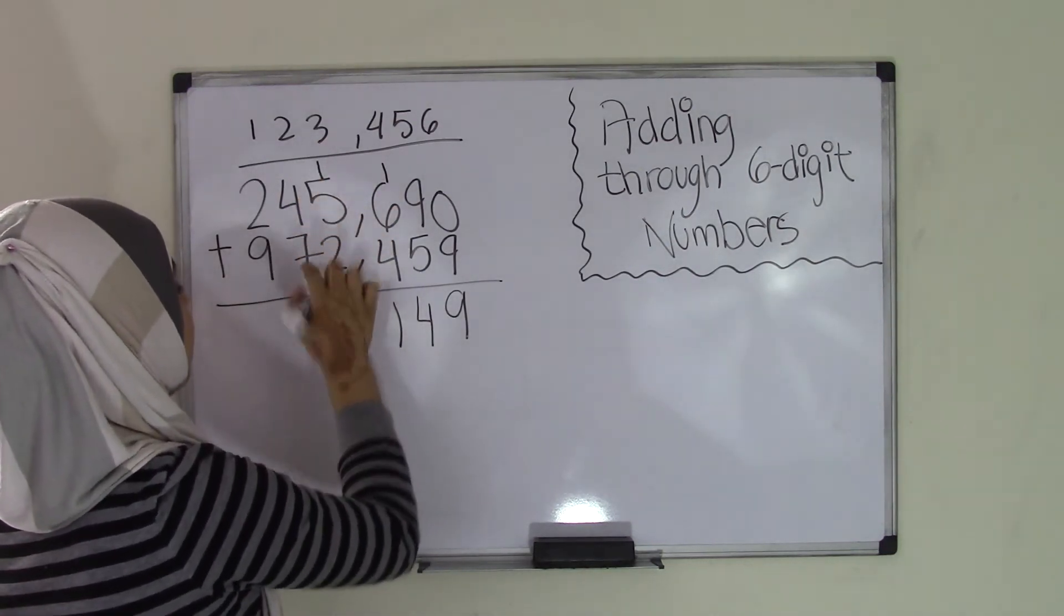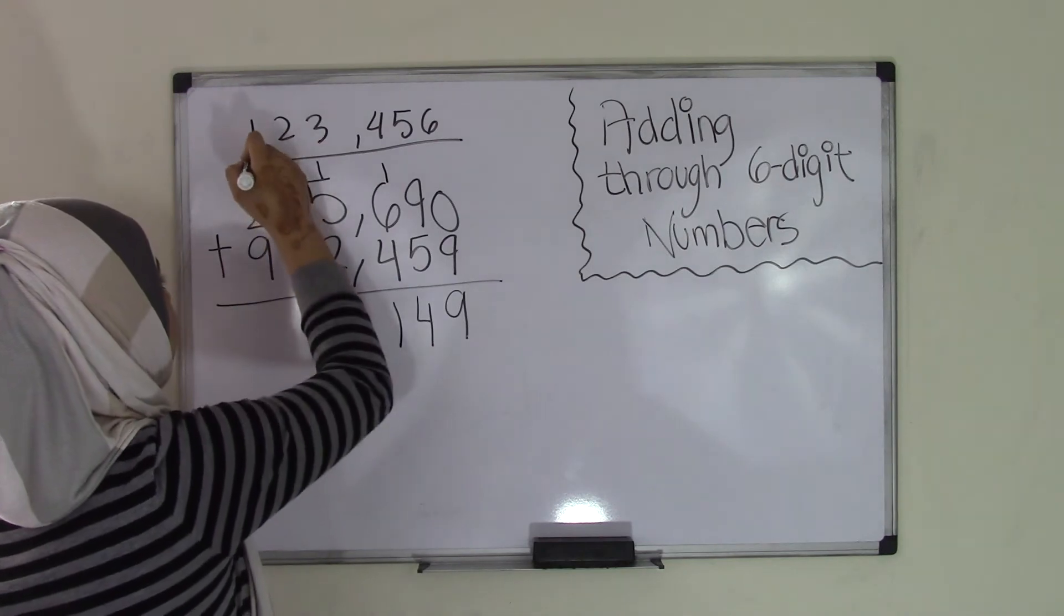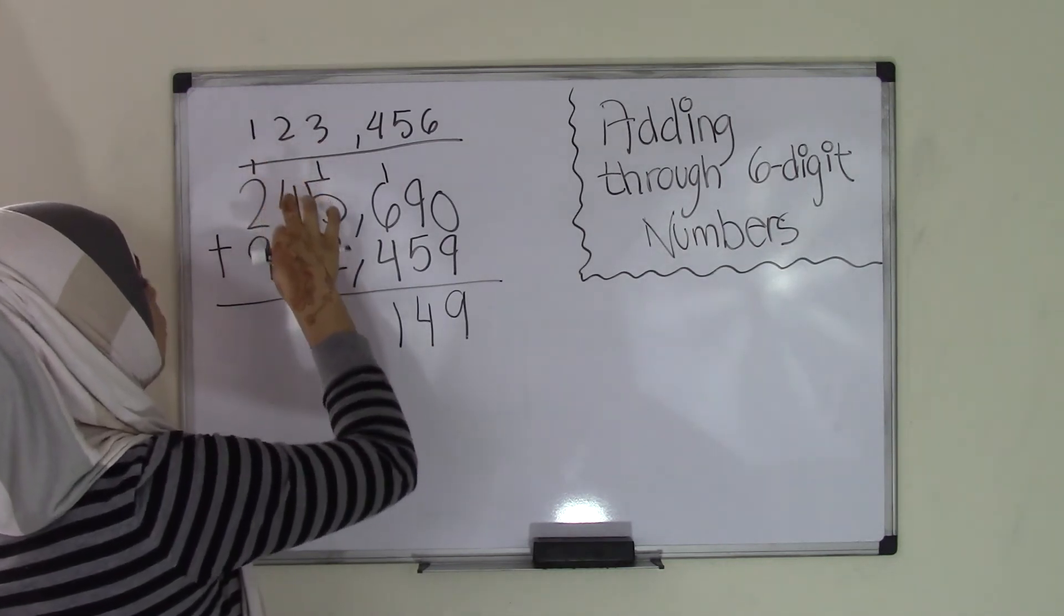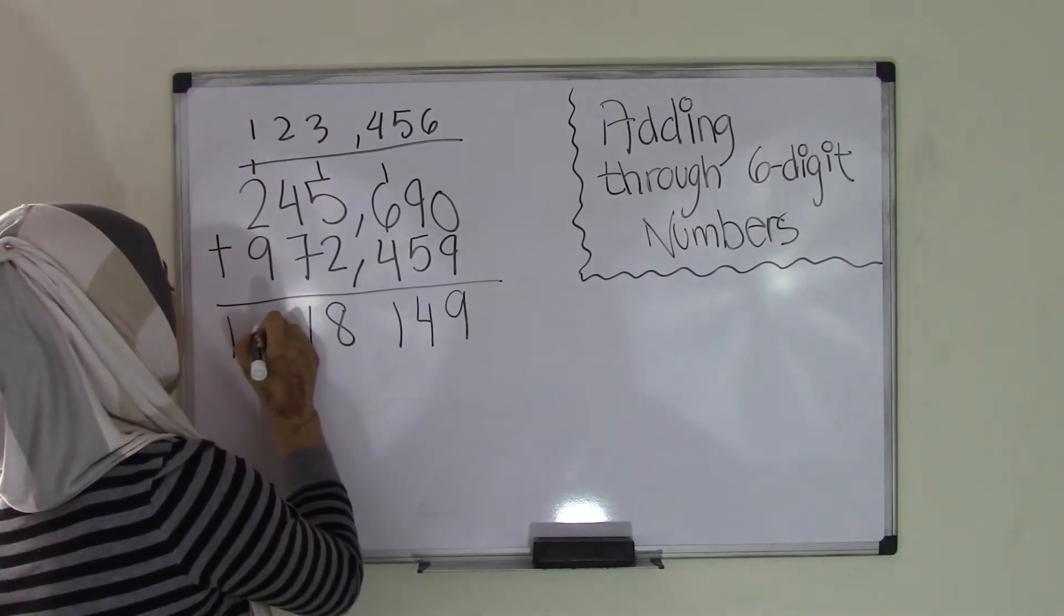4 plus 7 is 11. Carry that other one. 1 plus 2 is 3 plus the 9 is 12. Okay?